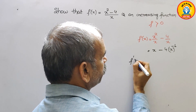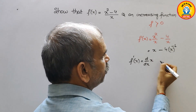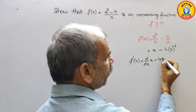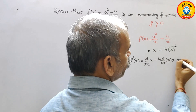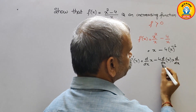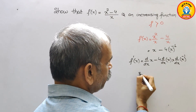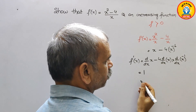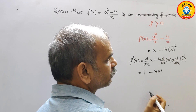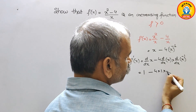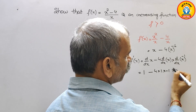Now we differentiate. Taking d/dx of (x - 4x⁻¹): the derivative of x gives 1, and differentiating -4x⁻¹ gives -4 times (-1)x⁻², which gives us +4x⁻².